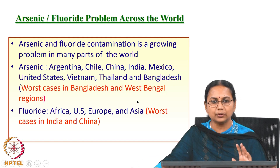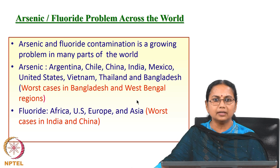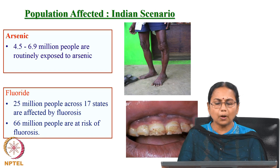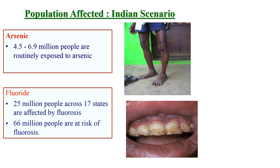I will give some idea about how we can remove arsenic and fluoride from domestic drinking water. Around 4.5 to 6.9 million people are routinely exposed to arsenic through drinking water. When it comes to fluoride, around 25 million people across 17 states are affected by fluorosis, and 66 million people are at risk of fluorosis in India.